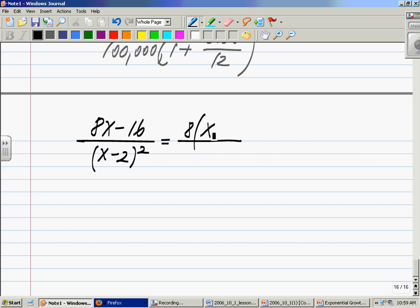So we have 8x divided by 8 will be x, minus 16 divided by 8 is 2, the bottom part x minus 2 squared.